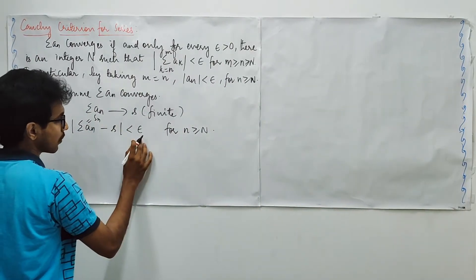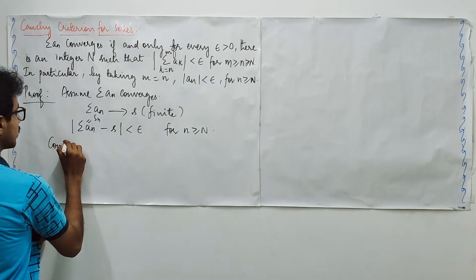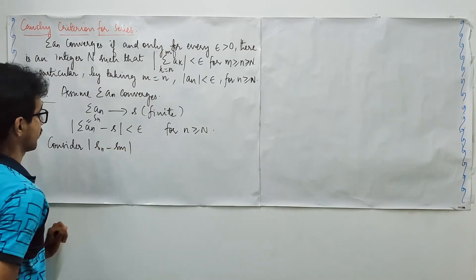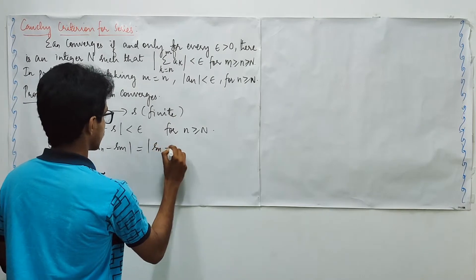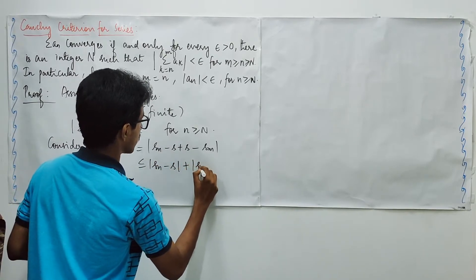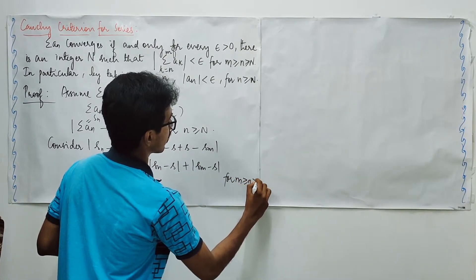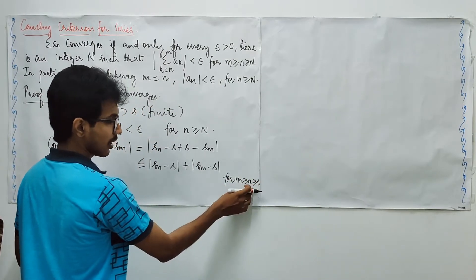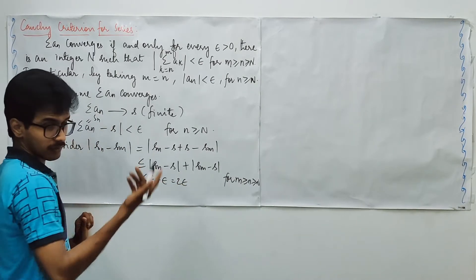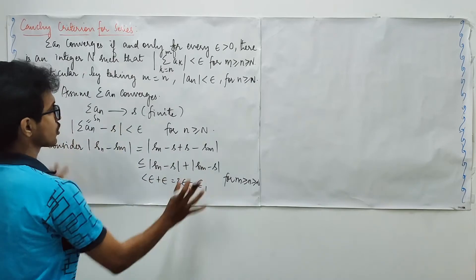By convergence, we may write summation a_n minus s is less than epsilon. The distance is going to be epsilon for some n bigger than or equals n_0. Now consider absolute of s_m minus s_n. It is going to be s_m minus s plus s minus s_n, and using triangle inequality, we may write this way.